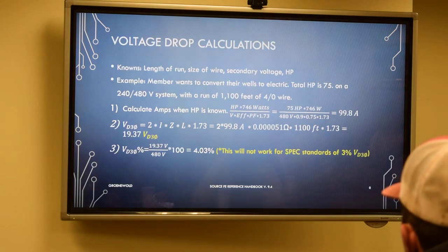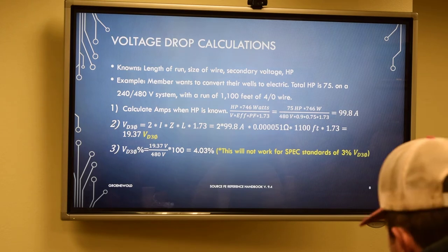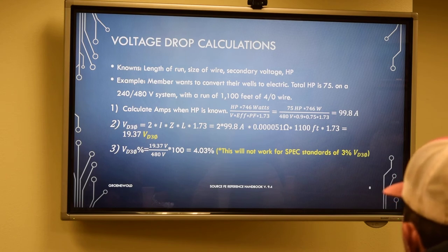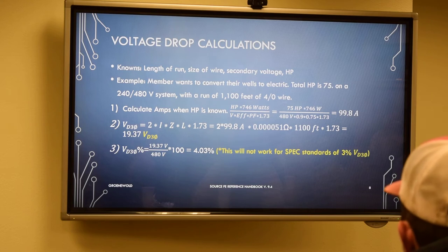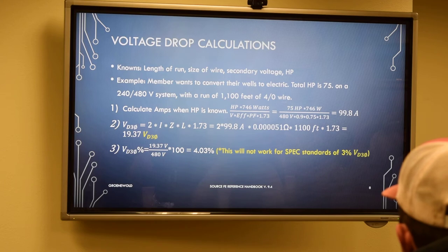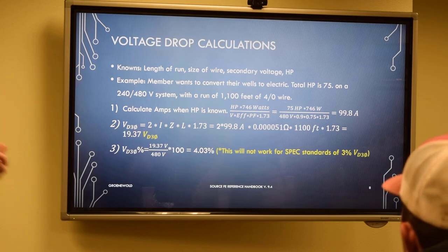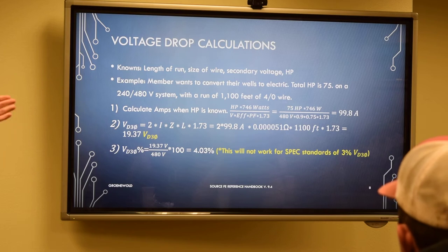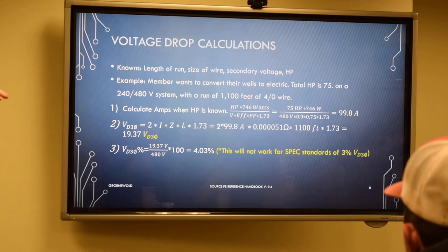Next example I'll go over is just going over how to calculate your voltage drop. Here's a basic voltage drop calculation where you know your length of run, the size of the wire, your secondary voltage, and a known horsepower. An example in your everyday use would be a member wants to convert their wells to electric, and the total horsepower that they have is 75 on a 240/480 volt system with a run of 1,100 feet of 4.0 wire. I've put this calculation right here, I know we have the calculators that do it, but if you want to see it, you take your 75 horsepower and multiply it by the 746 watts. And I have a slide further on that, why we use that number.